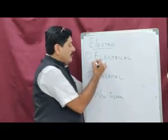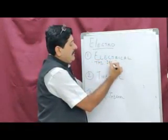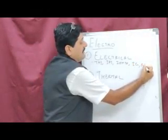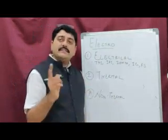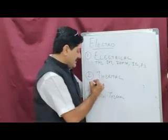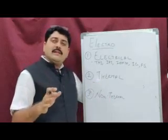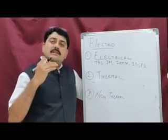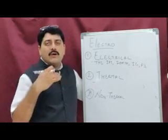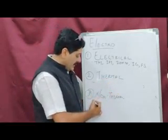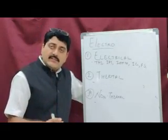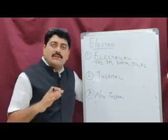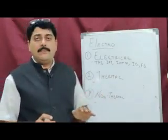Under the electrical category come TENS, IFT, iontophoresis, intermittent galvanic, faradic stimulation, Russian currents, and diadynamic currents. The thermal category includes deep heating, superficial heating, and cold therapy — such as cryotherapy and heat therapy via short wave diathermy, infrared radiation, paraffin wax bath, and thermal ultrasound. Non-thermal treatments include pulsed electromagnetic wave diathermy, pulsed ultrasound therapy, and cold laser therapy.